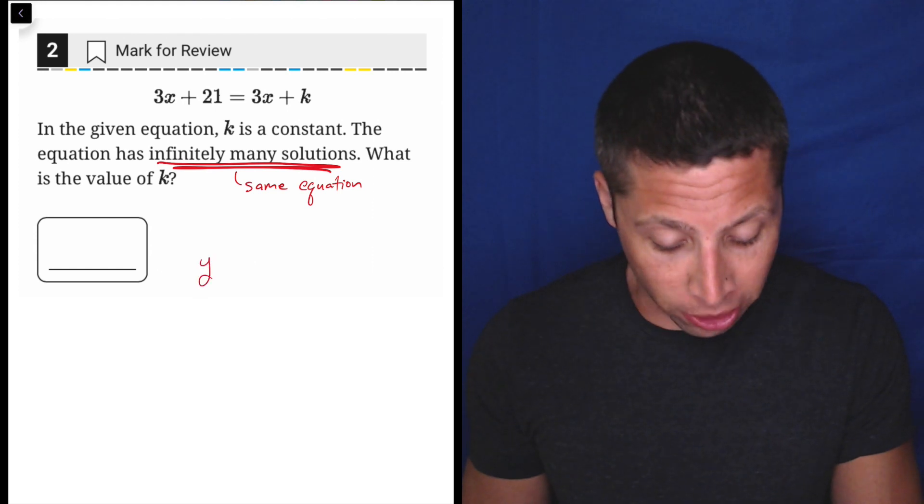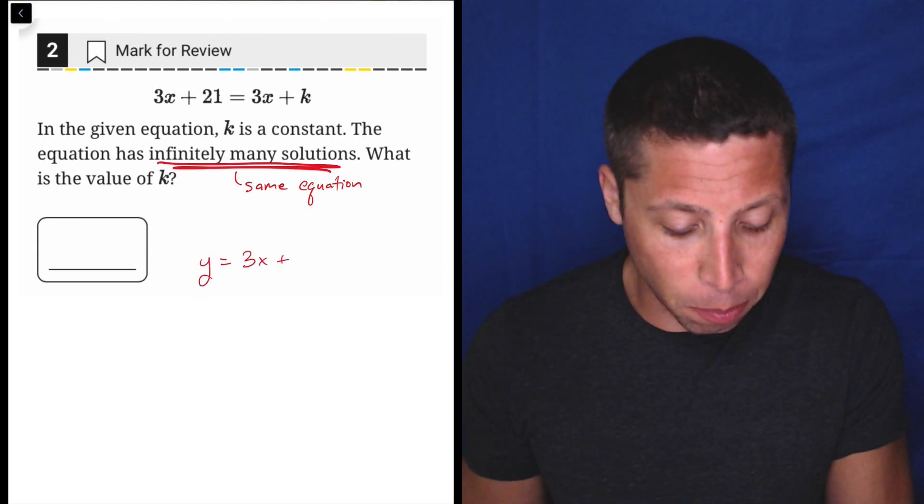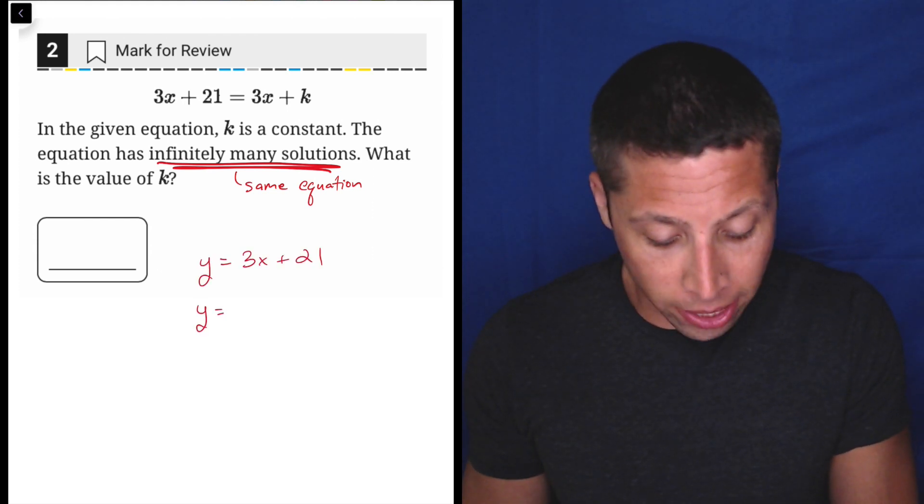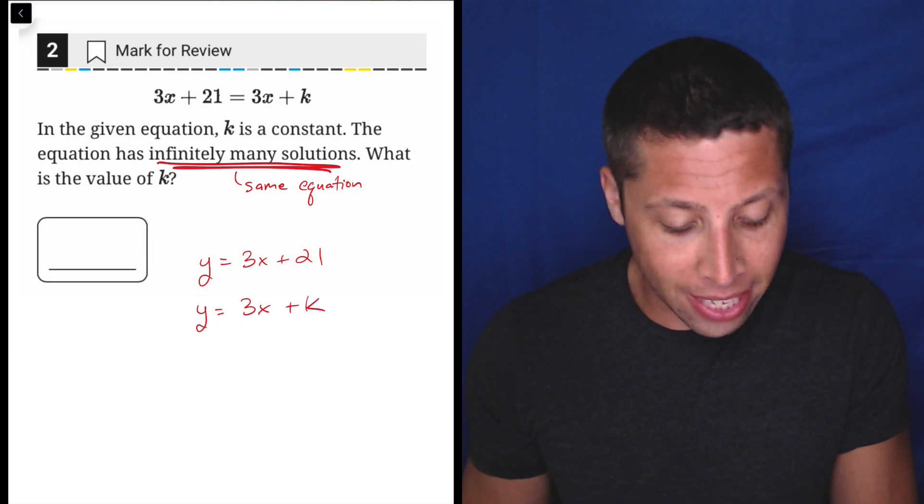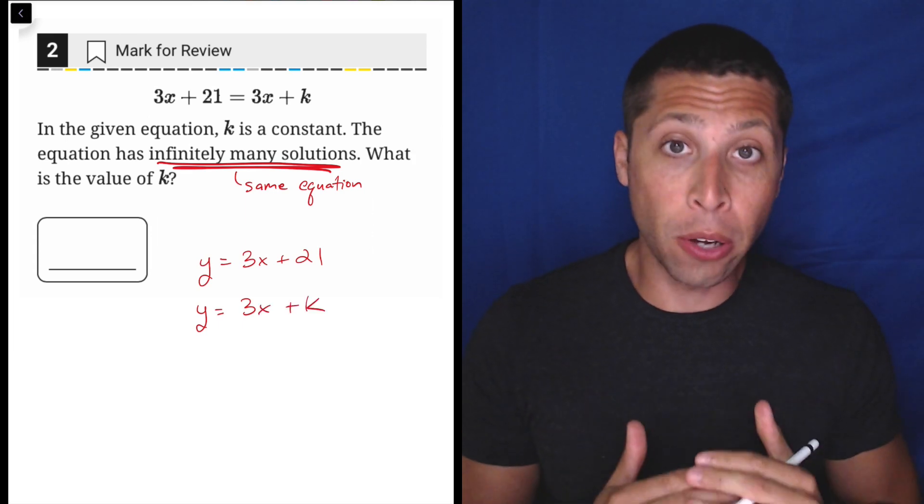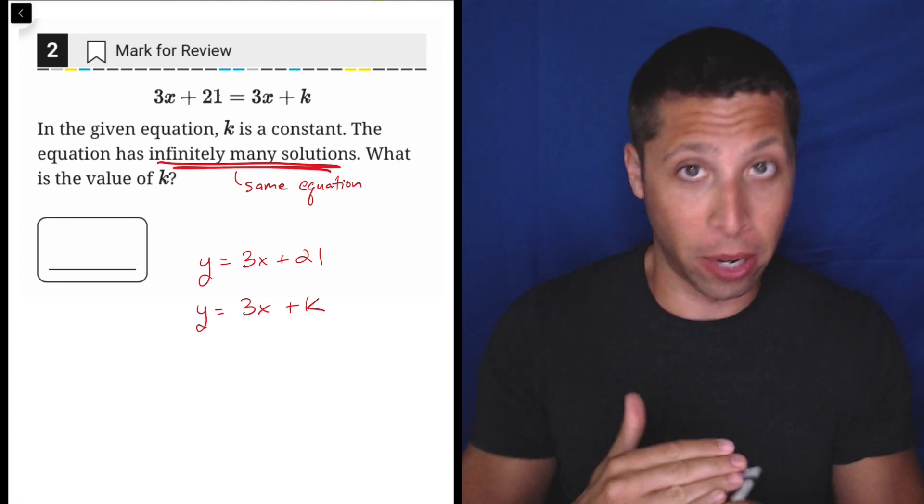So if we graphed two equations, Y equals 3X plus 21 and Y equals 3X plus K, we would want both of those lines to literally be the same. They overlap at every single point.